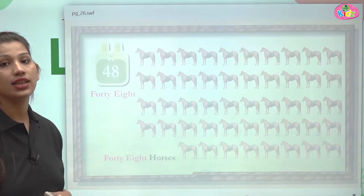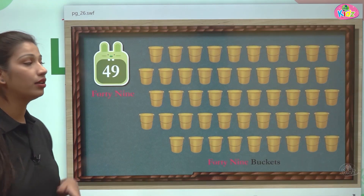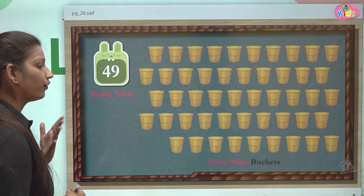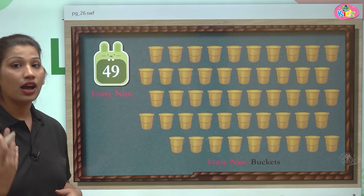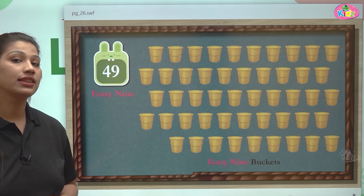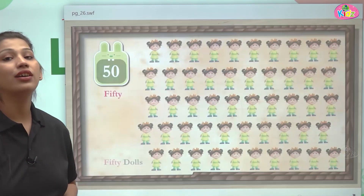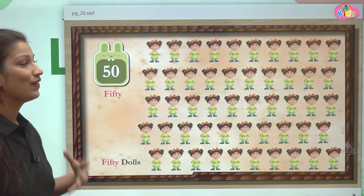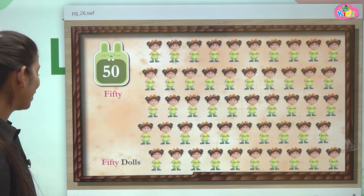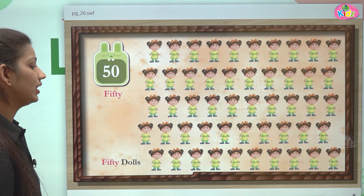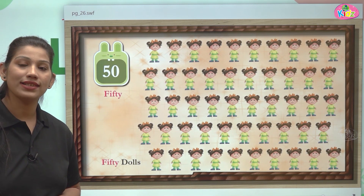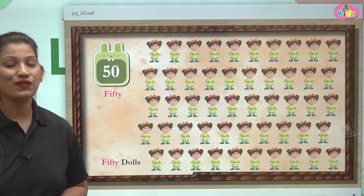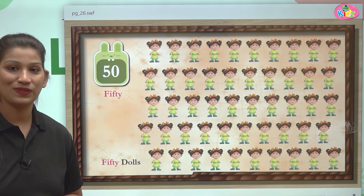After 48, there comes number 49 — 4-9. After 49, there comes number 50 — 5-0 is 50, and we saw 50 dolls. F-I-F-T-Y is 50.